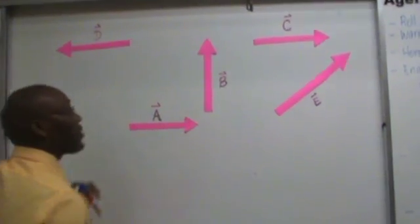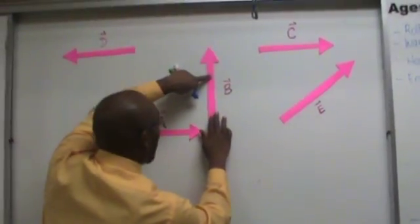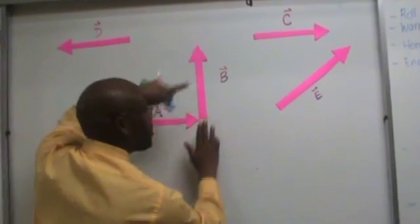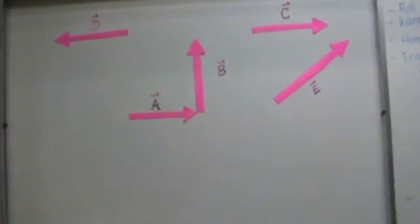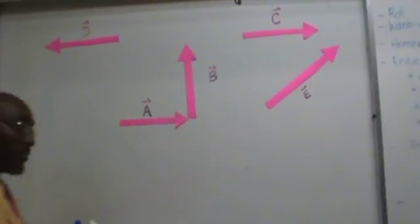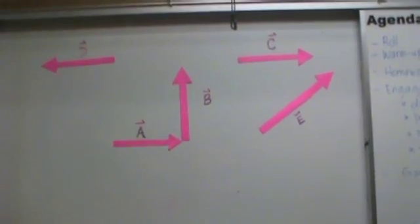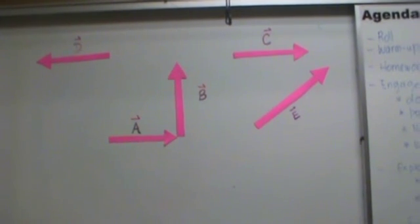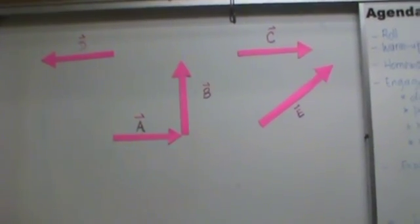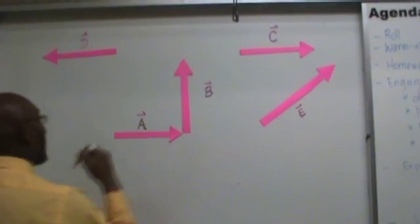So we have vector A and we want to add it to vector B. Once again, we put these vectors head to tail. Now if you look at this diagram, it looks like it is supposed to be a right triangle. So let's go ahead and make it a right triangle.